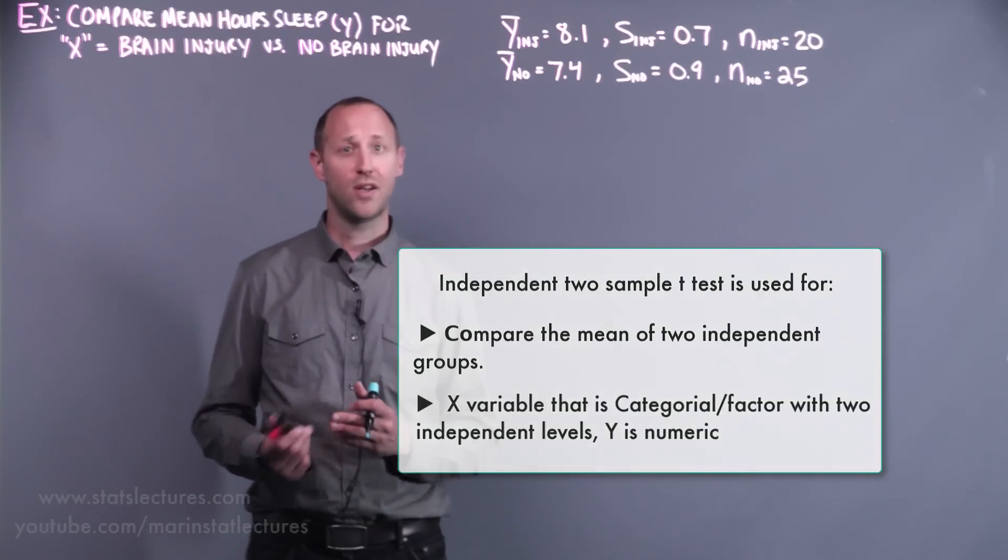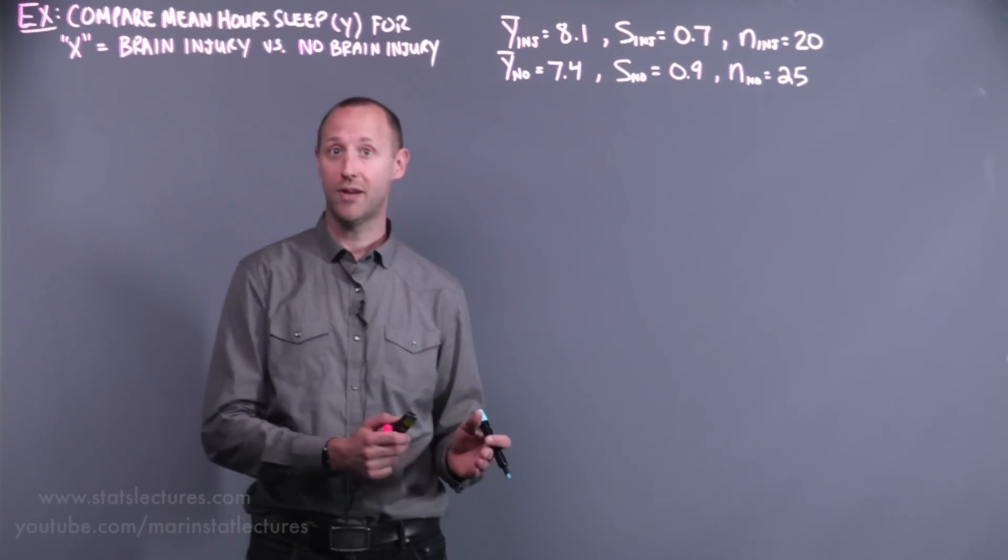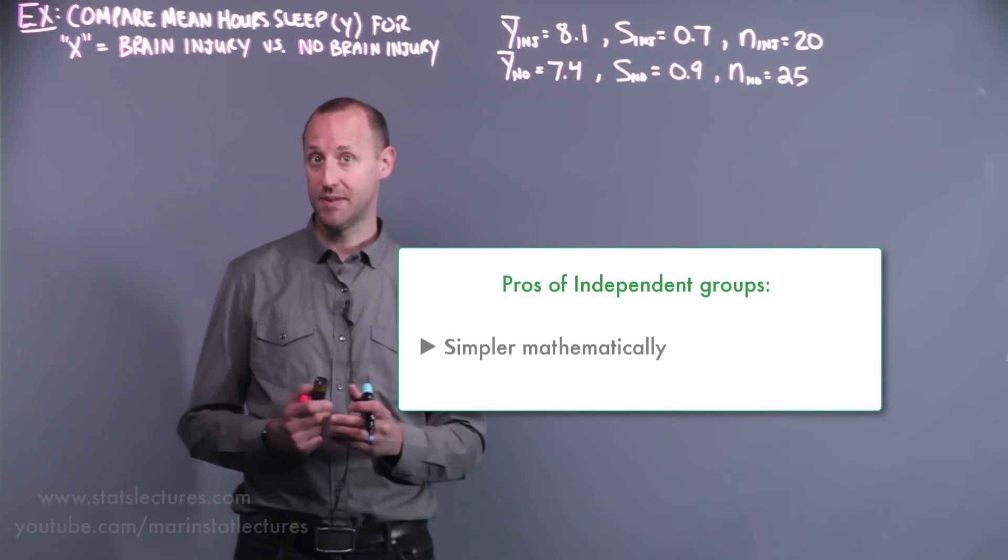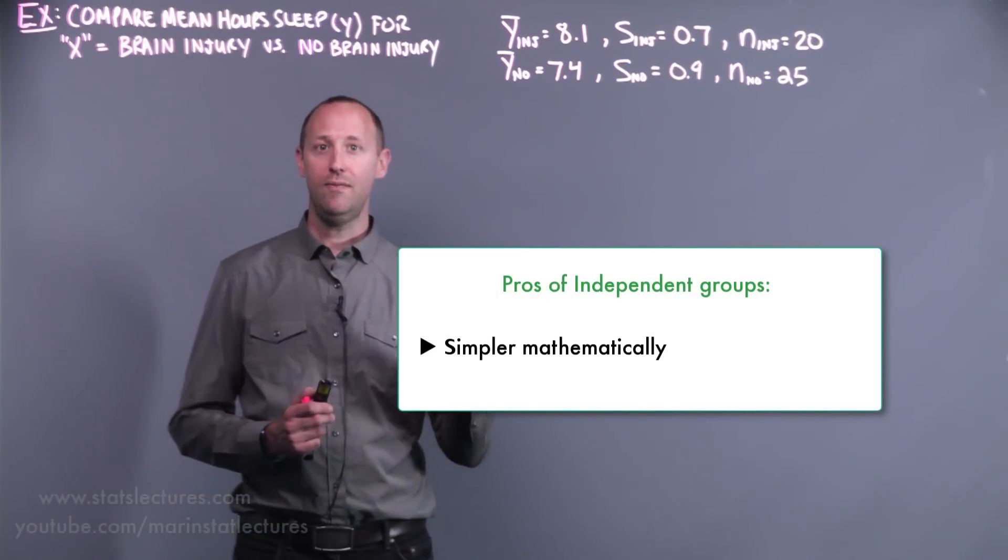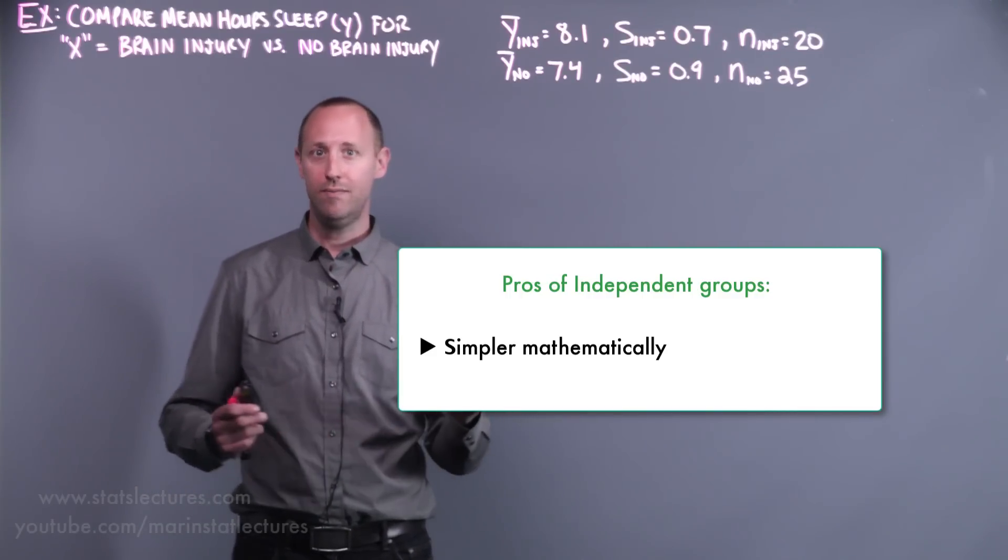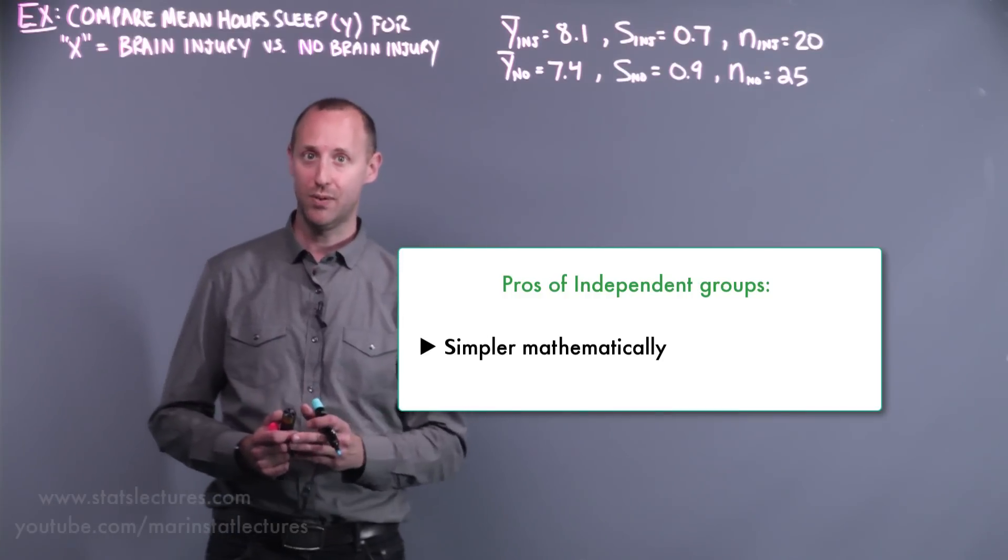There's some pros and cons to comparing independent groups rather than paired or dependent groups. One of the pros is that it's simpler mathematically. If the two groups we're comparing are completely independent of each other, we don't need to worry about any relationship or dependency between the two.